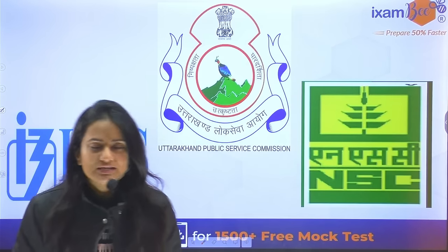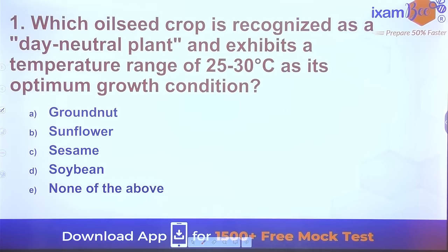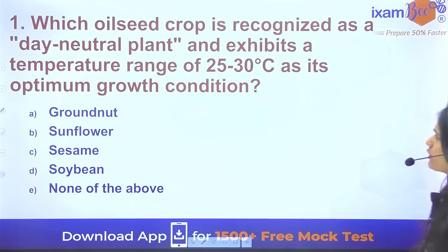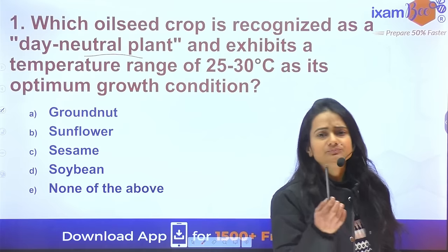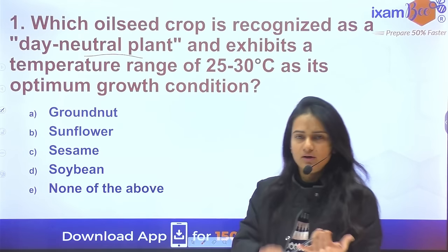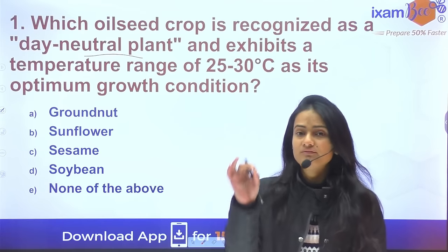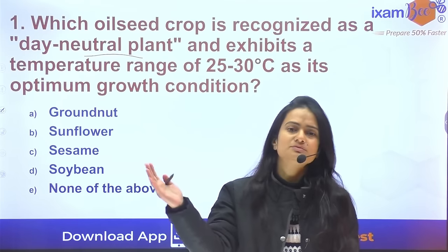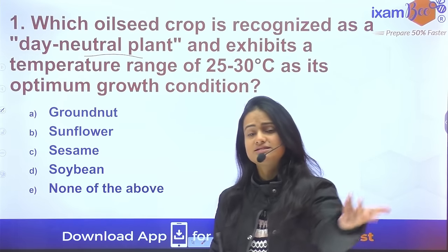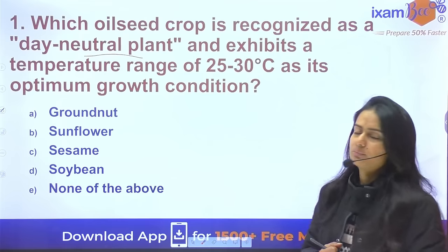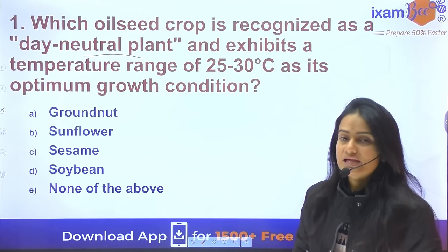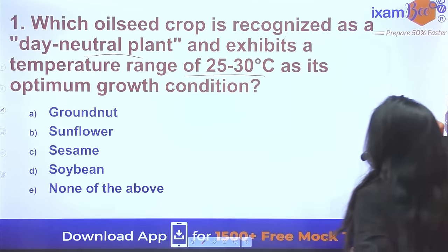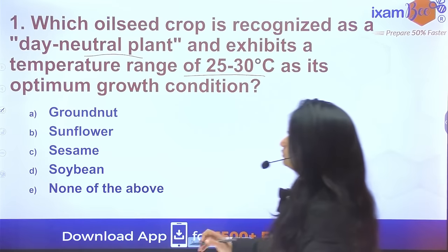Let's start with the first question: which oil seed crop is recognized as a day neutral plant? We have different types of plants — long day plants requiring more than 12 hours of sunlight, and short day plants requiring less than 12 hours. The day neutral plant we're looking at has a temperature range of 25 to 30 degree Celsius — this is the sunflower.